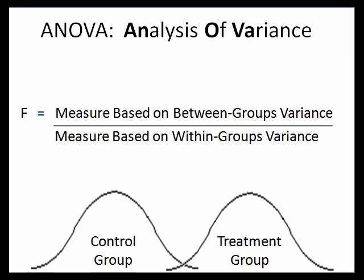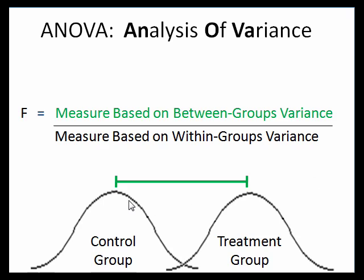So now we come to our analysis of variance, which is often referred to as just the ANOVA. And when we look at the results of an ANOVA, it's presented as an F-statistic. What the F-statistic is doing is it's going to compare the difference between the groups.